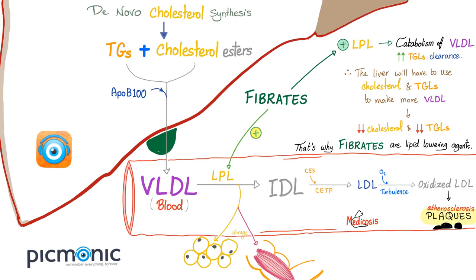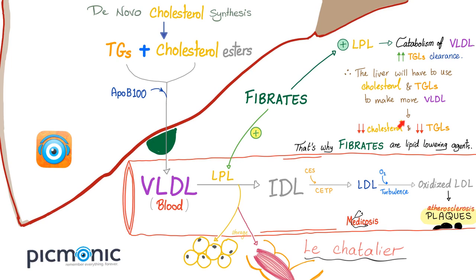Medication number three: fibrates. They stimulate LPL, lipoprotein lipase. VLDL is converted to IDL very quickly, and since VLDL is rich in triglycerides, you're clearing away VLDL and washing out triglycerides. This decreases triglycerides. It also decreases cholesterol esters by shifting equilibrium according to Le Chatelier's principle. Decreasing cholesterol and triglycerides qualifies fibrates as a lipid-lowering agent.